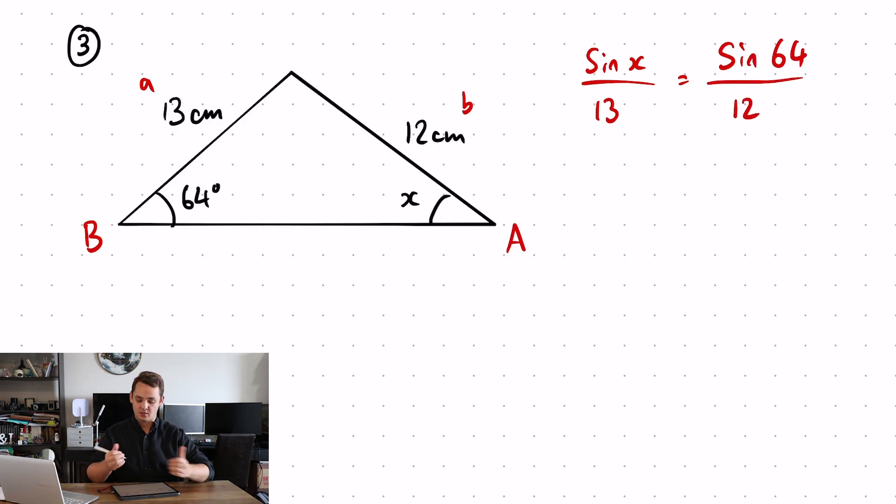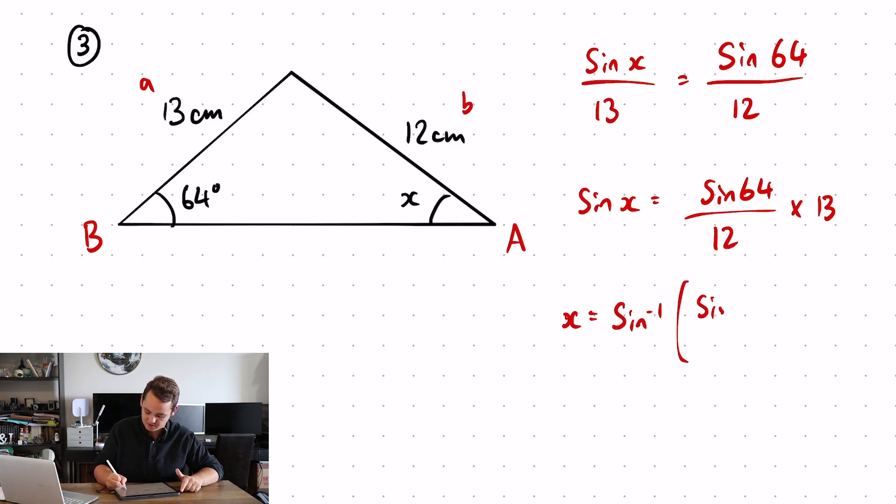Now to rearrange this to find x. So sine x is equal to sine 64 over 12 multiplied by 13. To get x by itself, I need to do the inverse of sine. So inverse sine, sine 64 over 12 multiplied by 13, to get me an answer of 76.8 degrees. Don't forget your units.